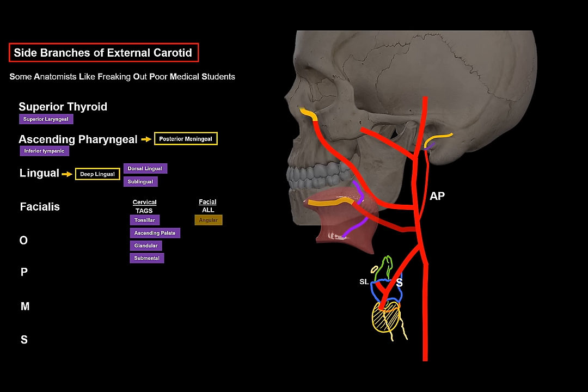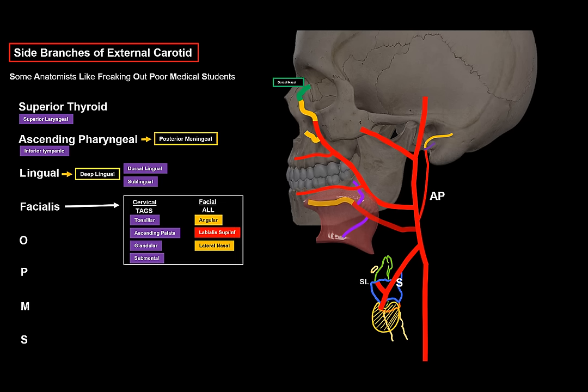For the facial branches — ALL: A for the angular artery, a terminal branch that anastomoses with the dorsal nasal artery from the ophthalmic artery at the medial corner of the eye, connecting the facial and ophthalmic arteries. L for the superior and inferior labial arteries supplying the top and bottom lip. The last L stands for the lateral nasal artery, supplying the dorsum and the nasal wing. That's the facial artery, remembered with TAGS ALL.